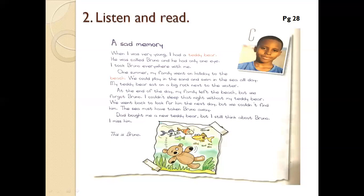When I was very young, I had a teddy bear. He was called Bruno and he had only one eye. I took Bruno everywhere with me. One summer, my family went on holiday to the beach. We could play in the sand and swim in the sea all day. At the end of the day, my family left the beach, but we forgot Bruno. I couldn't sleep that night without my teddy bear. We went back to look for him the next day, but we couldn't find him. The sea must have taken Bruno away. Dad bought me a new teddy bear, but I still think about Bruno.